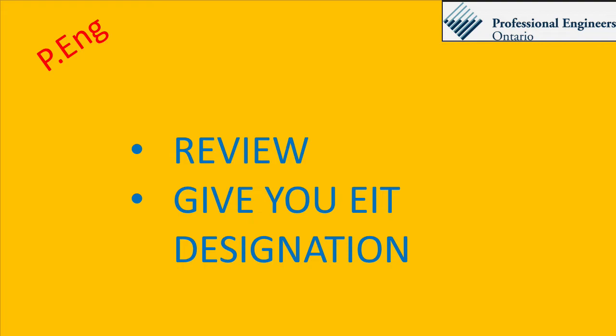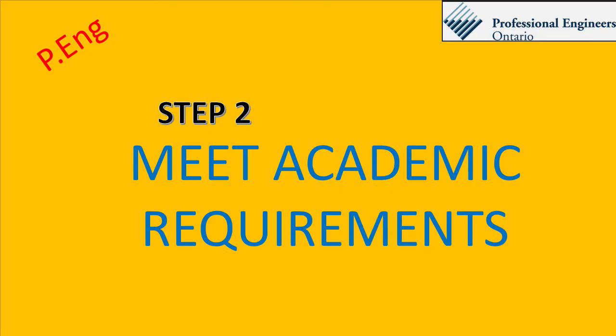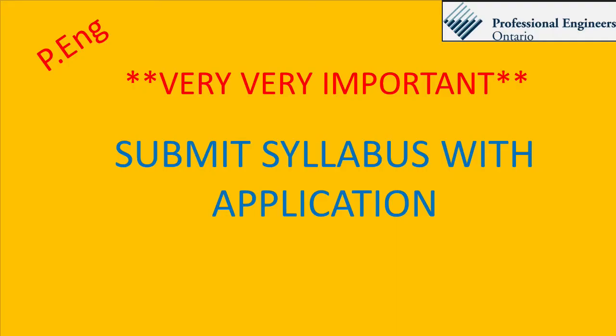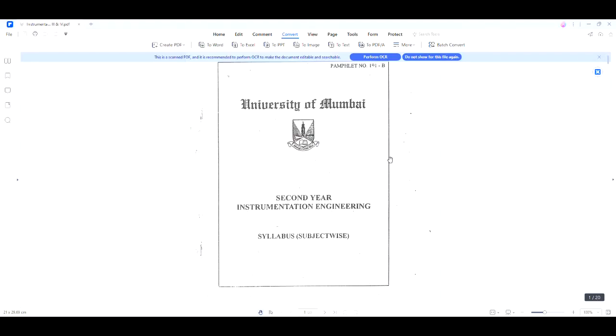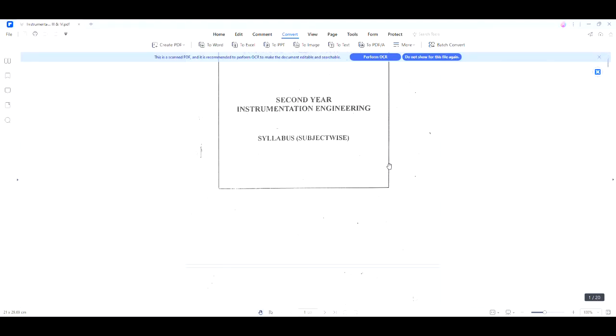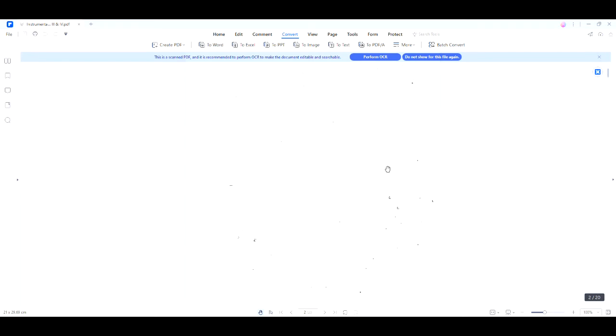Checking your academics means evaluating how equivalent your engineering degree is to a Canadian one. Please listen carefully — please submit your university syllabus. If you do not submit your university syllabus, PEO has no way of comparing your course with a Canadian one. As a result, you will be assigned more exams than the customary four. I have known people who have been assigned more than 12 exams, and that is a killer.